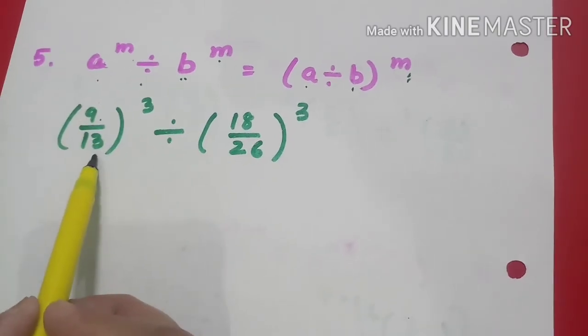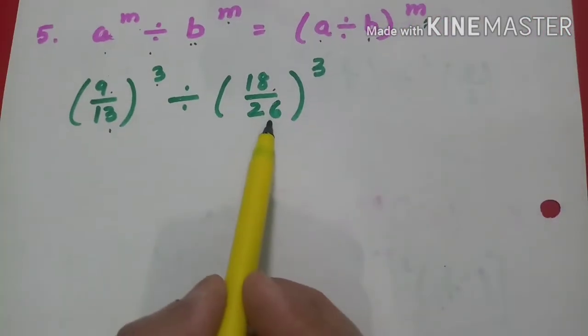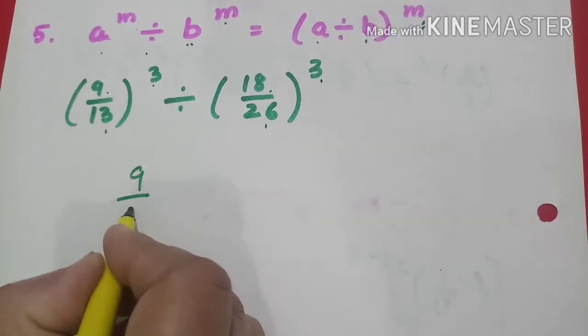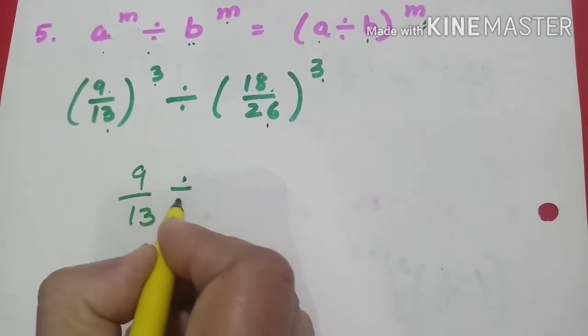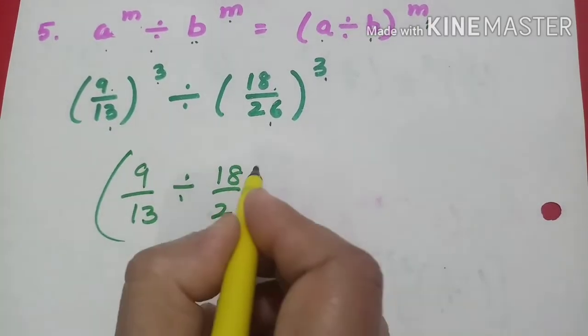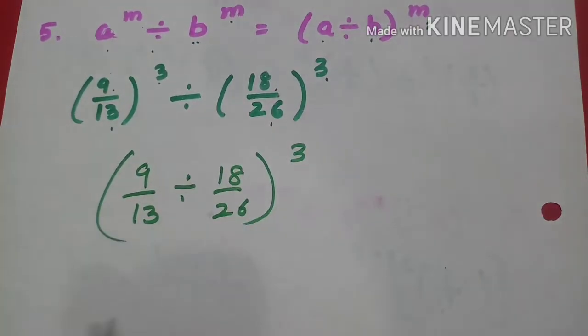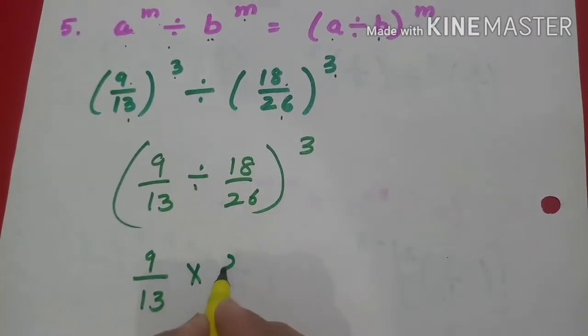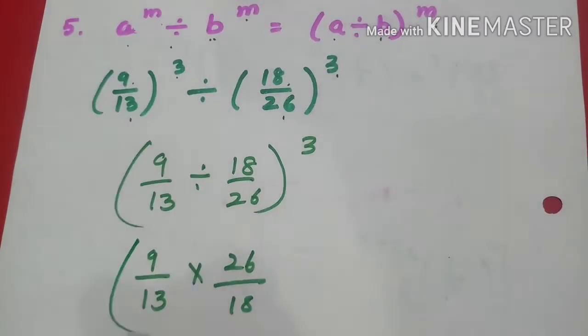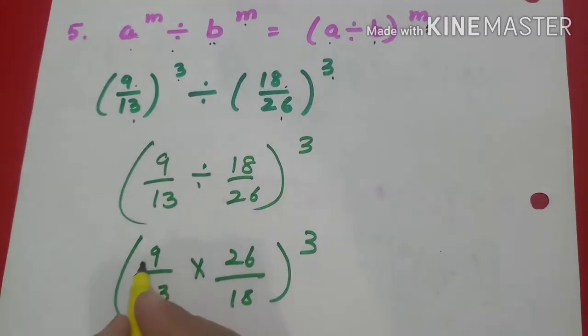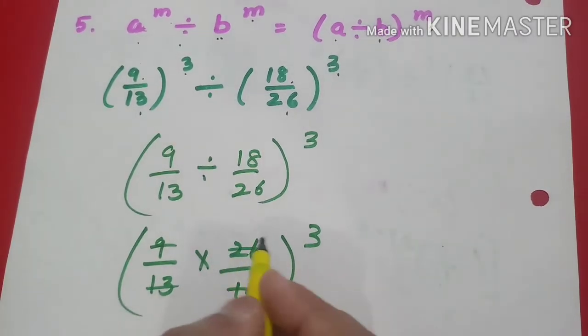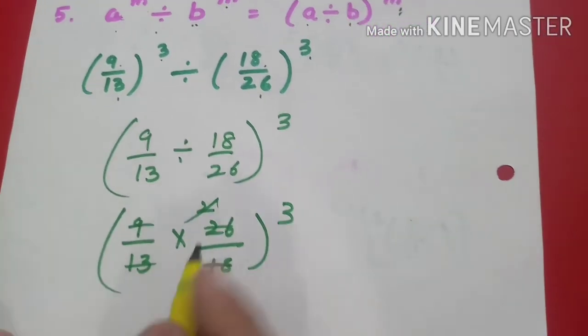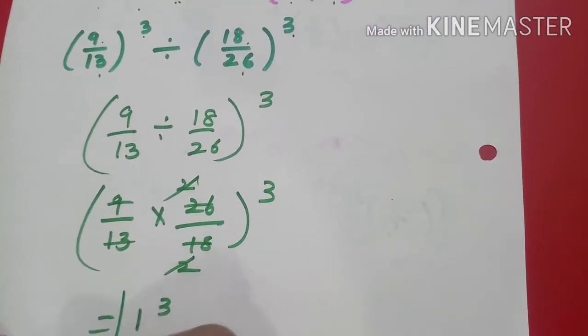I am going to divide (9/13)³ by (18/26)³. So I will divide 9/13 by 18/26 with the same power, which is 3. For rational division, I'll take the reciprocal of the divisor. It becomes (26/18)³. Here it reduces: 13 cancels and 2 cancels with 2. So 1³ will be my answer.